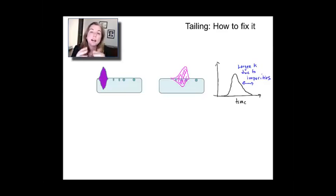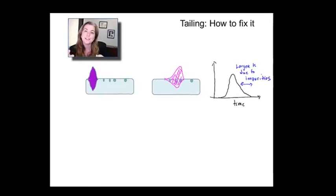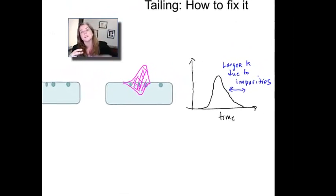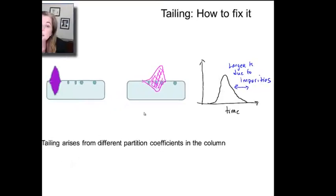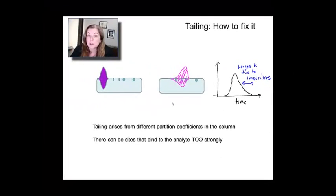And what that does is it stretches the peak out because some of the material is kind of hanging onto the column. And so, what you see then is a nice front end going to be quite as symmetric, but you get this long tail to longer elution times because these defects are hanging onto the analyte and kind of keeping them in place.